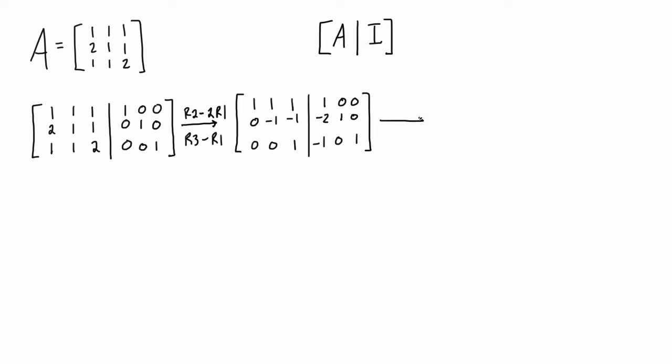And then the next step that we can do would be adding row 2 to row 1. So we get r1 plus r2 and let's add row 3 to row 2 as well. So we get row 2 plus row 3.